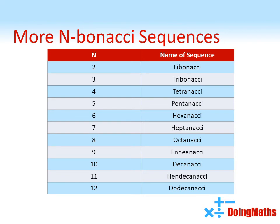Now you can make n-Bonnacci sequences with any positive whole number that you like. So have a look at this table. We've already met the Fibonacci, Tribonacci and Tetranacci sequences. But if you add five terms together you get a Penta-Nacci sequence. Six terms gives you a Hexanacci sequence, and so on.